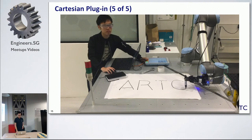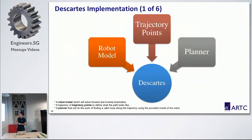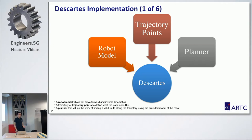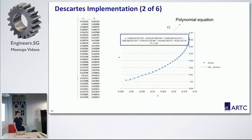The next method is CART. For CART, we require the software to implement three things: the robot model, which solves forward and inverse kinematics; the trajectory points, which define what the path looks like; and the planner, which finds a valid joint path along the trajectory using the provided robot model. Because I used the path creator to get all the coordinates, for linear motion it is straightforward to write the equation. But for trajectory points, I used Excel to derive a polynomial equation.